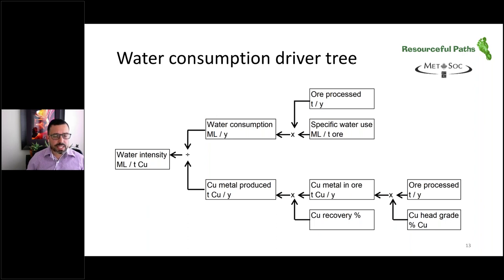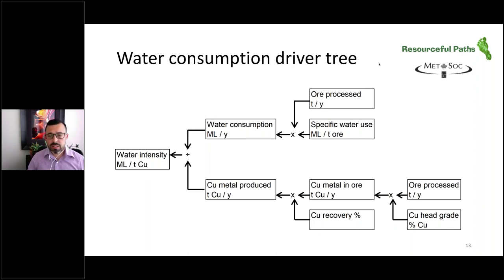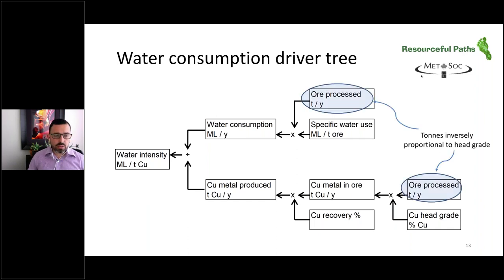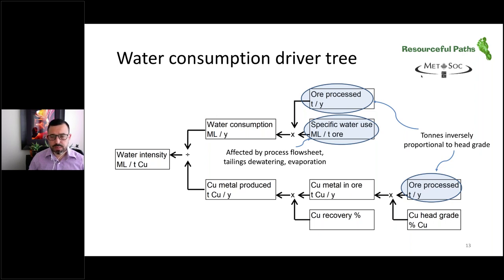We can understand water intensity in mining through a driver tree. This is an example for a copper operation with two branches. The bottom branch includes production, which comes from how much ore is processed times the head grade times the recovery. On the top branch, we have water consumption, driven by the amount of ore processed and a specific water use in megalitres per tonne of ore. If we want to reduce water intensity, we can look at how much ore is processed — inversely proportional to head grade for a given unit of copper production. Increasing head grade means less ore processed per unit of copper and less water. We can also reduce specific water use through process flow sheet selection and managing tailings dewatering and evaporation.